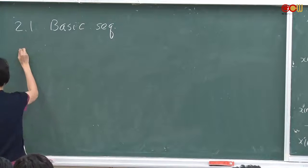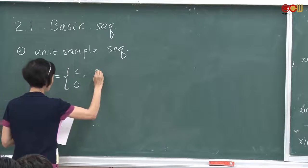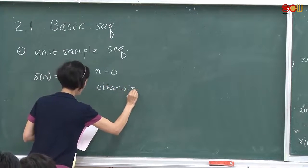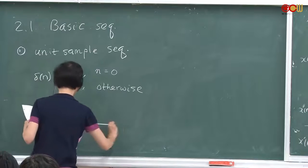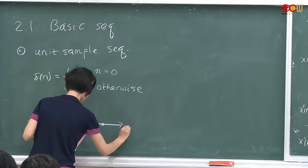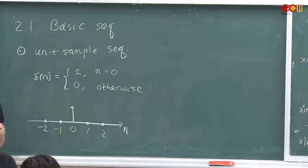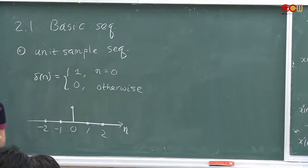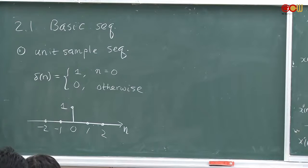Unit sample sequence. Delta(n) is equal to 1 when n is equal to 0, and 0 otherwise. If we draw the picture, it's 0, 1, 2, minus 1, minus 2 — it's 0 everywhere except at time equal to 0, where it's equal to 1. This is a unit sample sequence.